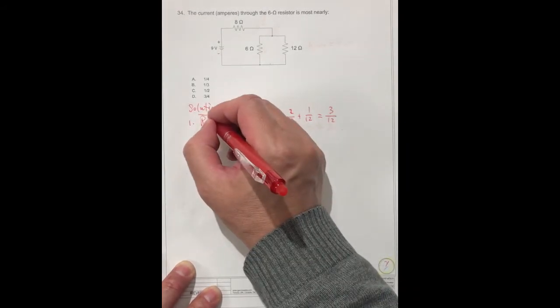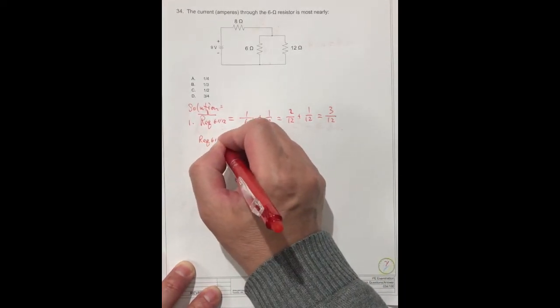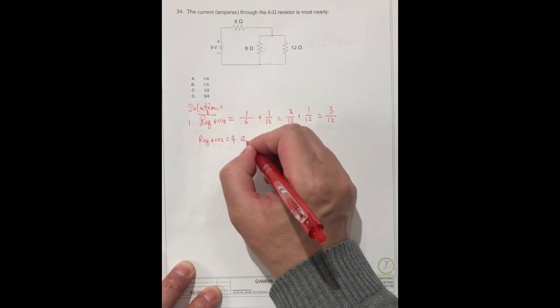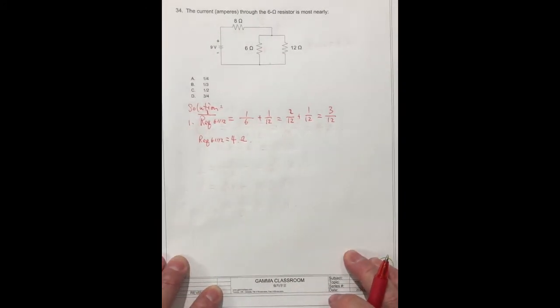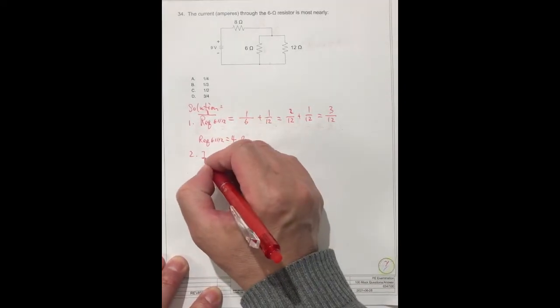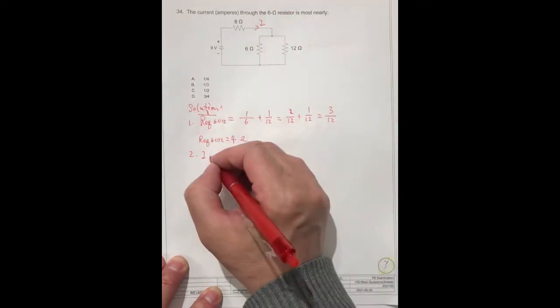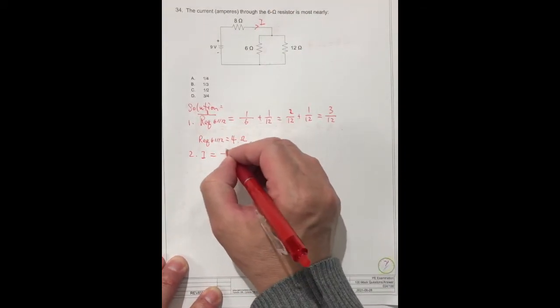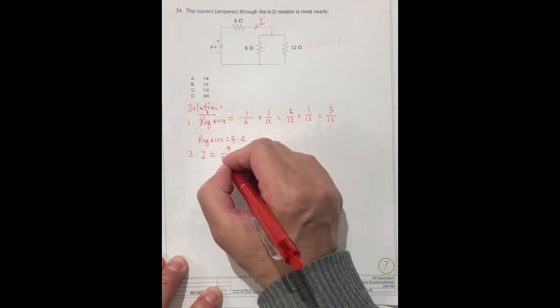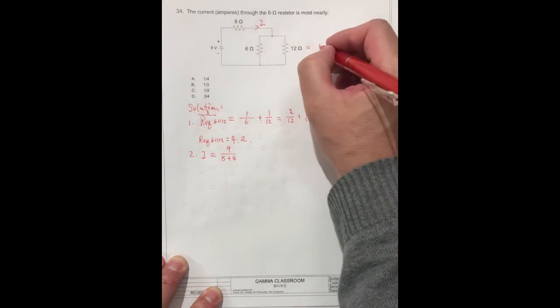First of all, R equals 6 parallel 12 should be equal to 4 ohm. 4 ohm. And the second one, the current I, we call this I, equals 9 volt divided by 8 plus 4, because this is equal to 4.